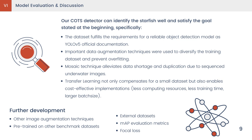Our detector satisfied the stated goals from the very beginning. Some important observations from the performance are: firstly, the dataset fulfills the recommended requirement for a reliable object detection model as YOLO v5 official documentation states. Secondly, data augmentation has improved model performance and prevents overfitting. Thirdly, the mosaic technique can alleviate data sorting and duplication due to sequence images. Finally, transfer learning not only compensates for our small dataset but also enables cost-effective training — less computing resources, less training time, and larger batch size.